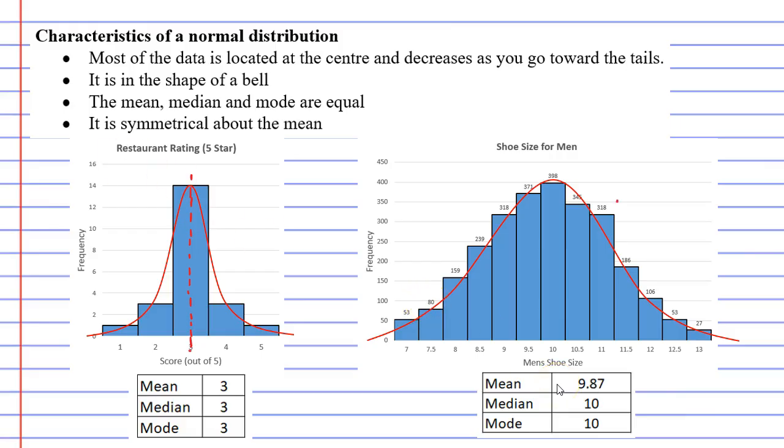Once again, if I draw a line where my mean, median, and mode are basically equal, about 10, you'll notice that the graph is symmetrical on both sides of this line. That brings us to our fourth dot point, which just says that it is symmetrical about the mean. Our mean is basically where we drew our two red lines before, and we can see that the graph is symmetrical on both sides of this axis.